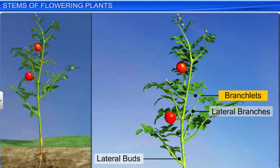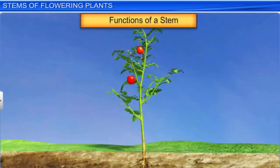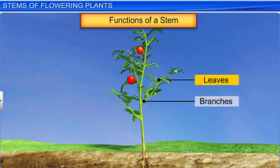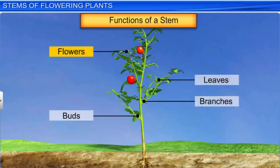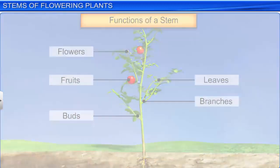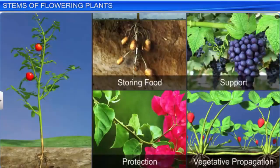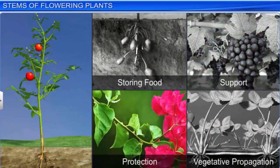The stem along with its branches holds the leaves, buds, flowers and fruits. It transports water, minerals, and photosynthates between the roots and the shoots. Apart from these functions, the stems of many plants get modified to perform functions like storing food, providing support, protection, and aiding vegetative propagation.